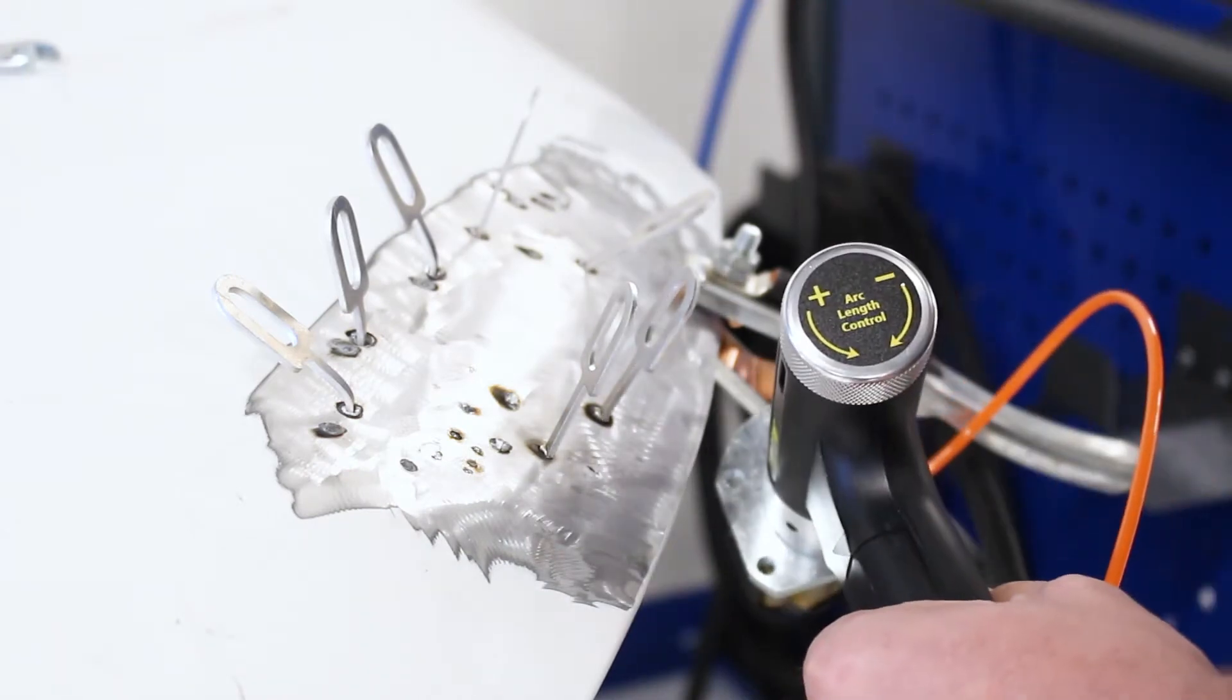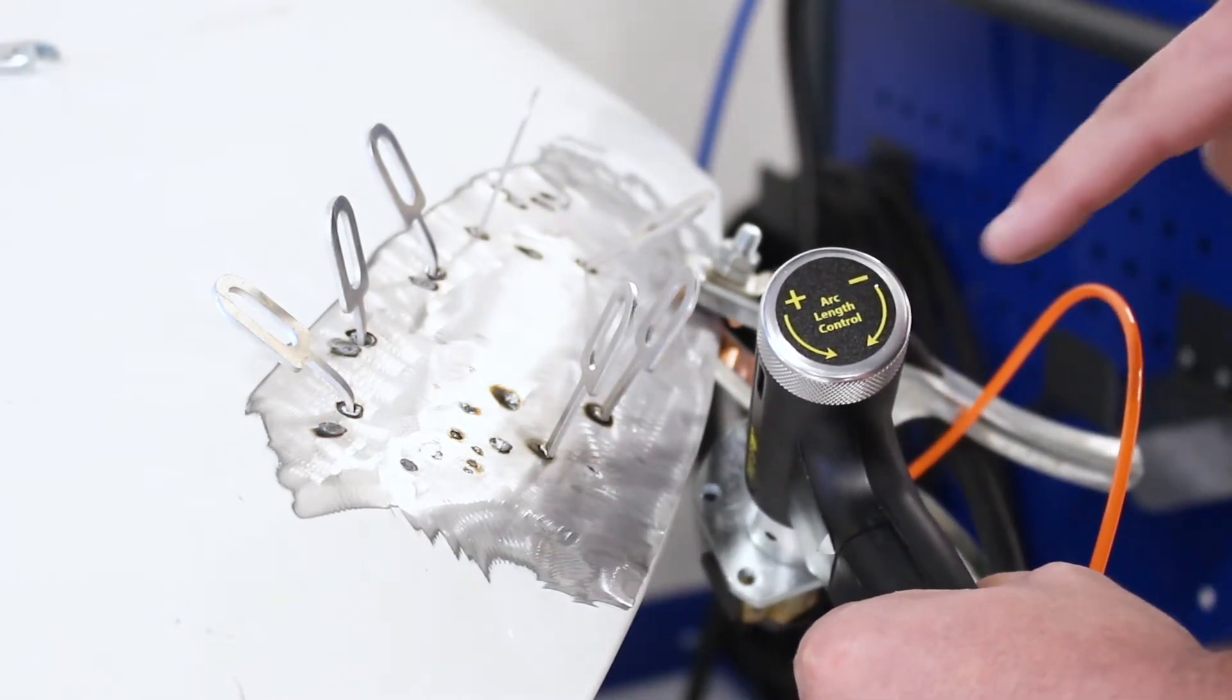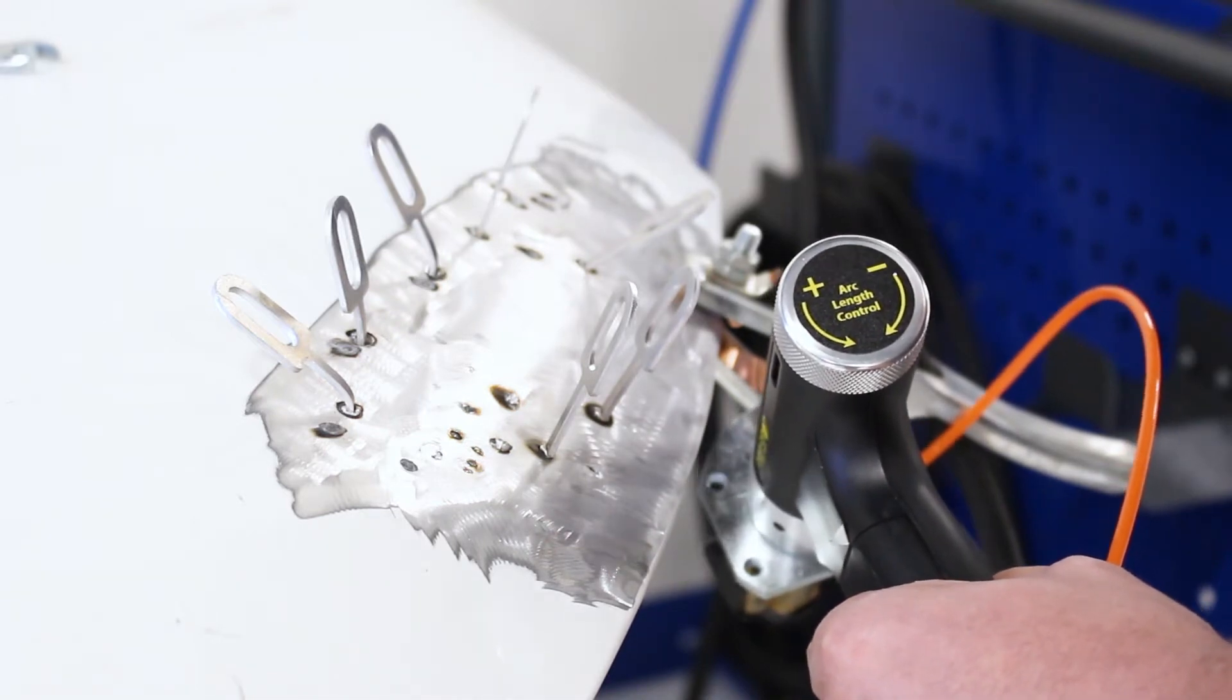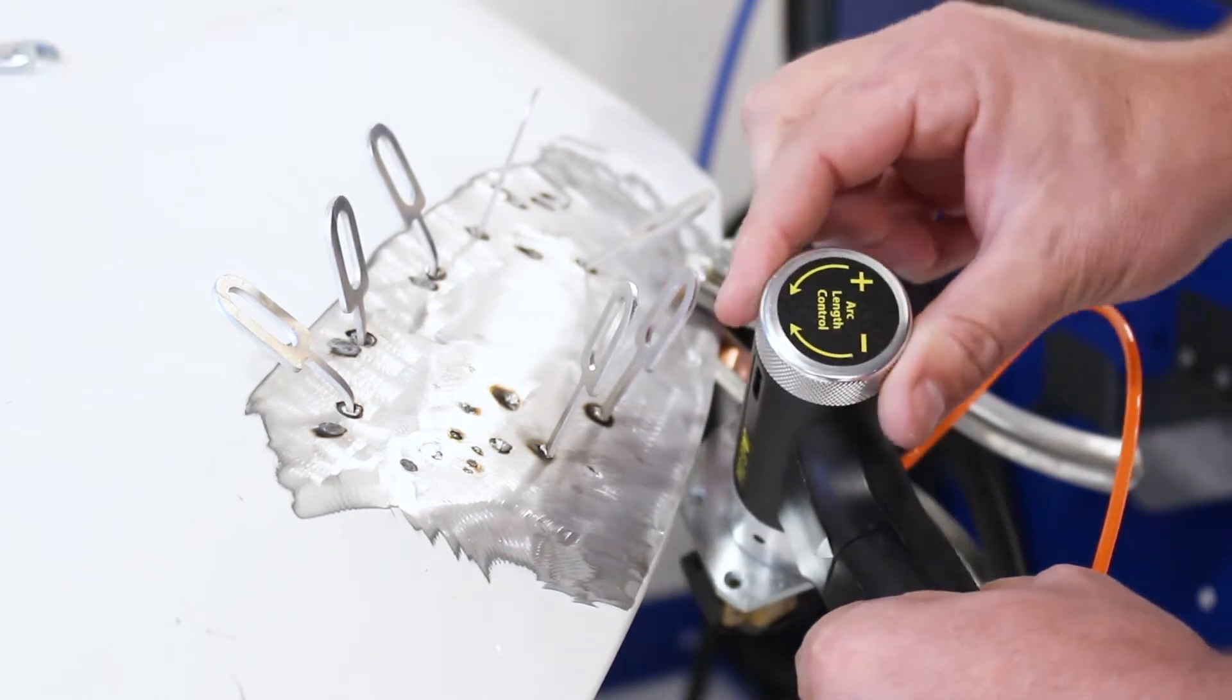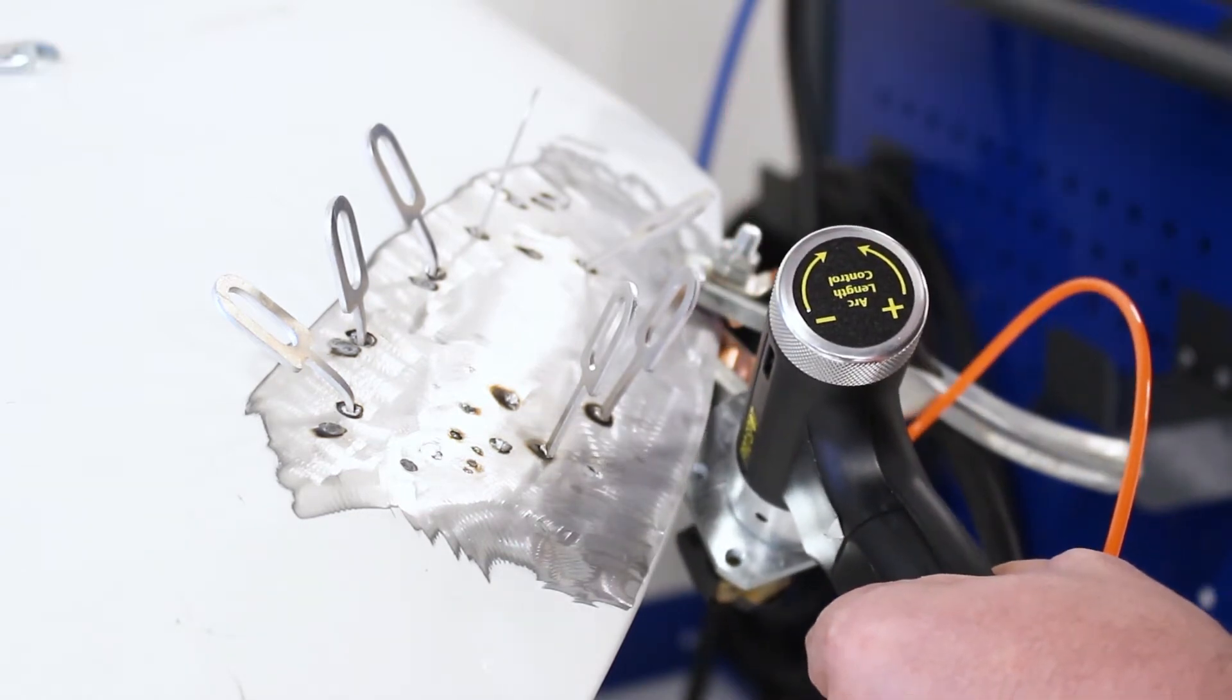The other thing that we can do is take a look at the back of the gun. We talked about the arc length and the knob on the back. If we have too much penetration, we might want to dial down the arc length and lessen that a little bit and try that out.